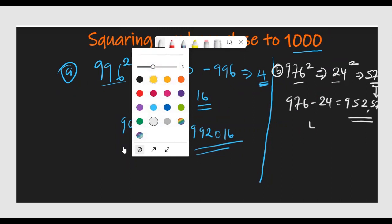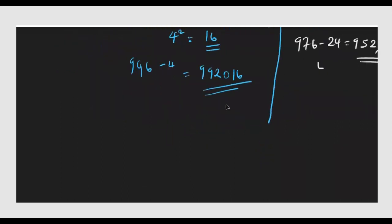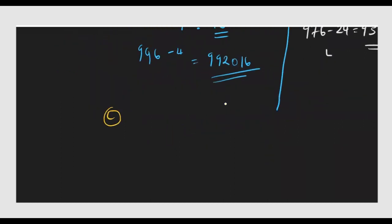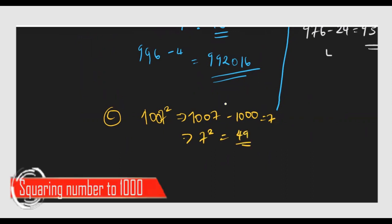Let's do another example with a different color. Now let's try a number above 1000 — the same procedure works just like we did with squaring near 100. So if someone asks what is 1007 squared, what you do is look at the difference: 1007 minus 1000, which gives you 7.